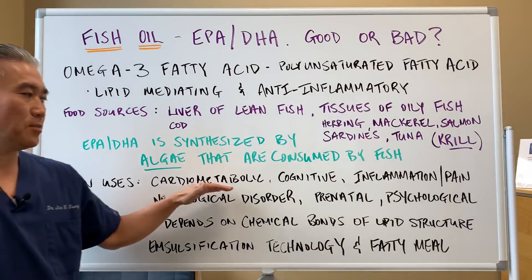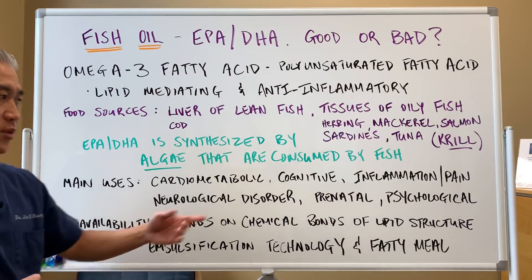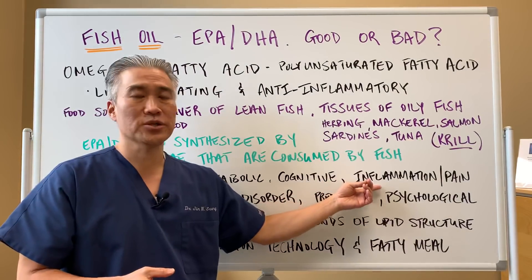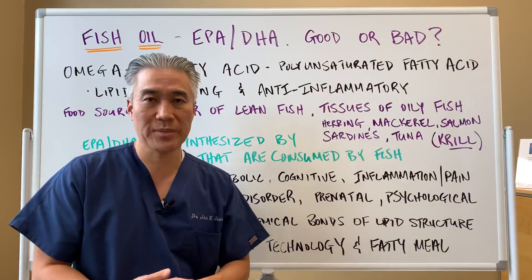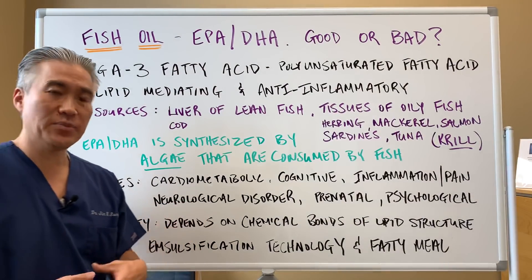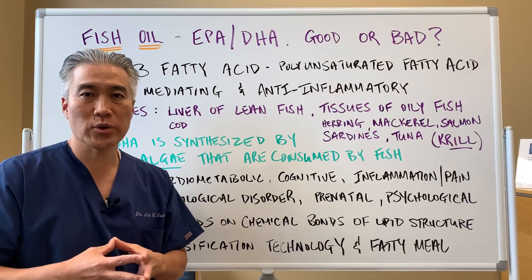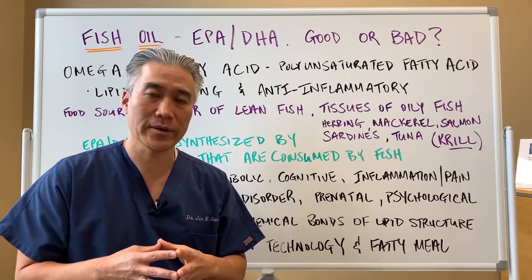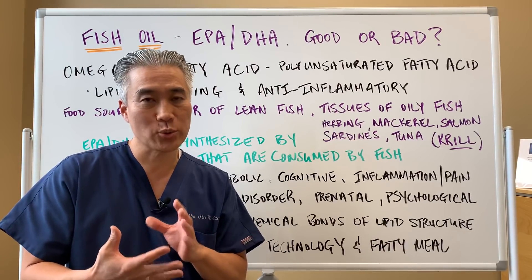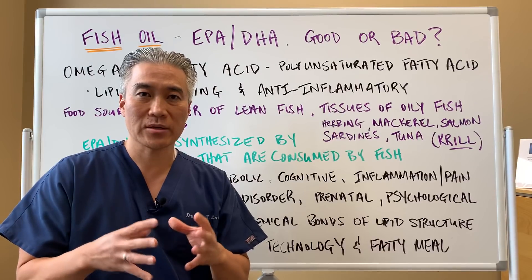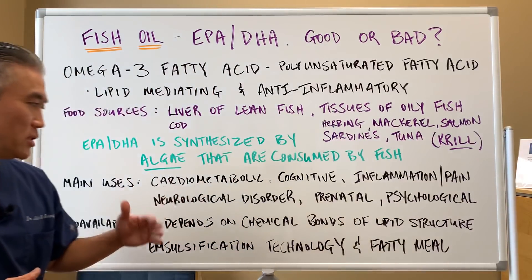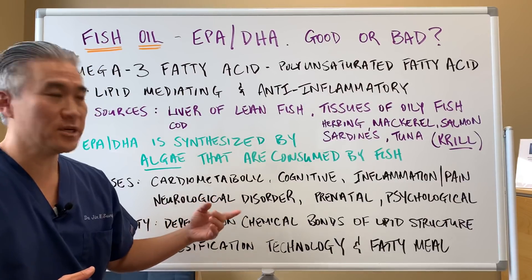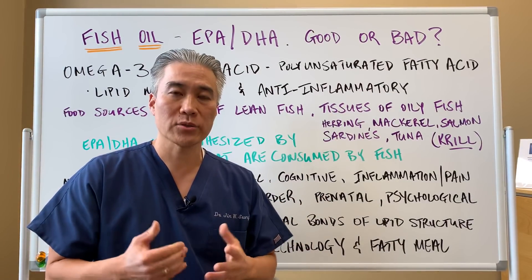The main uses are cardiometabolic — cardiovascular issues and so forth — cognition or brain function, inflammation and pain such as joint pain. If it's good for inflammation, it's also good for inflammatory skin conditions. Neurological disorders as well — you need fish oil to make cells healthier because every cell in our body has a phospholipid bilayer, meaning you need oils or fish oils to create that bilayer. So fish oil impacts neurological disorders by supporting cellular function and decreasing inflammation. It also works for prenatals and psychological conditions.